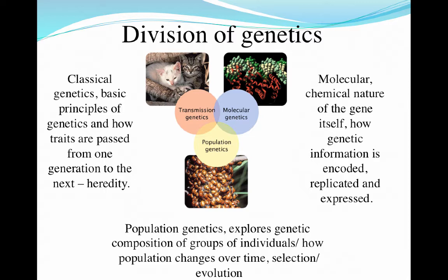When you think about yourself individually, you may have traits that came from mom or from dad. The way that we study those genes and how they're passed from one generation to the next is the discipline of transmission genetics. The discipline of molecular genetics is very different because this is where we're actually looking at the chemical nature of a gene. A gene is going to be a location on a chromosome that codes for a specific trait.